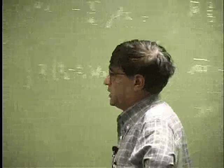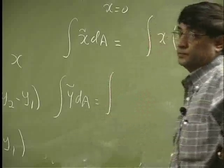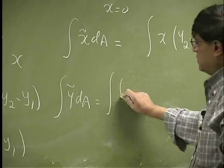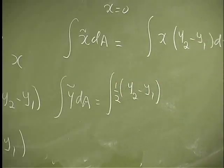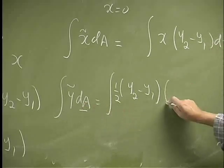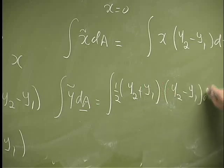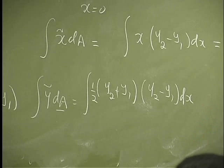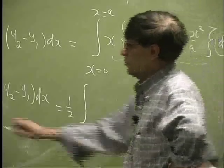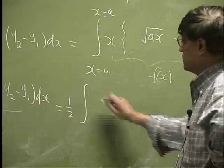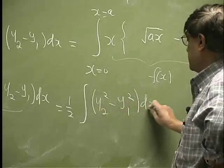We need one more integration. This time we need y tilde da. Now y tilde is known to, that's one-half y2 minus y1. dA is also known, that's y, this is plus, you have y2 minus y1 dx. So this is going to be one-half, you have a state of integration. We're going to multiply these two, that gives you y2 squared minus y1 squared times dx.